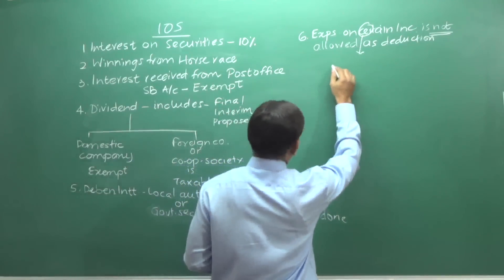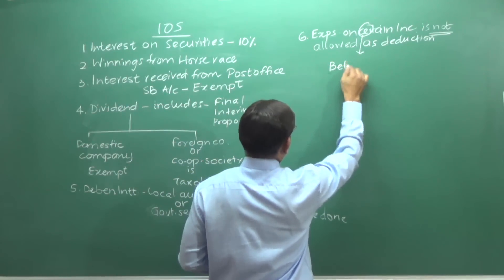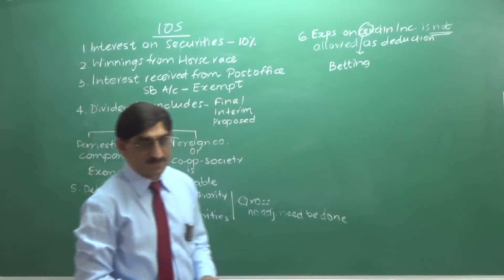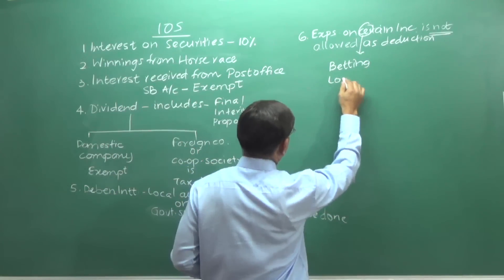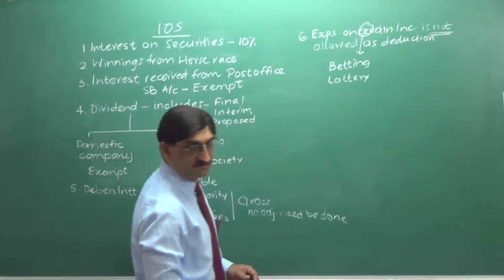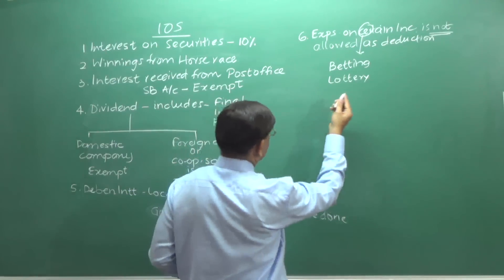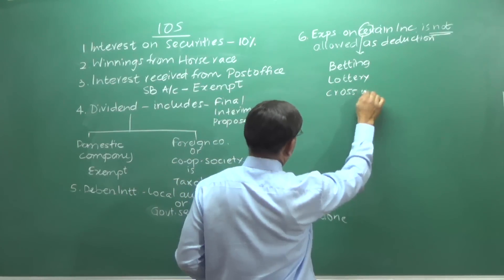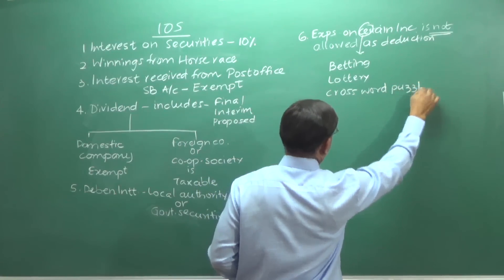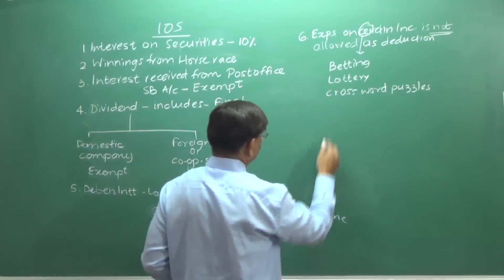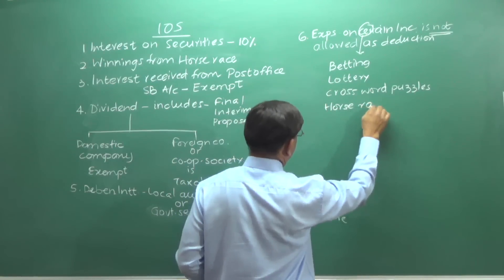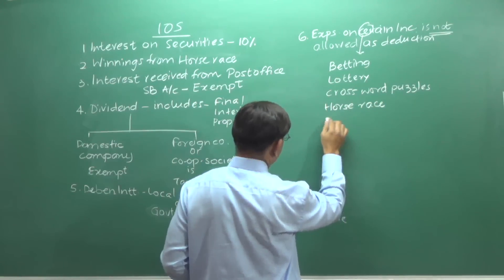The incomes are income from betting, income from lottery, income from crossword puzzles, income from horse race, income from gambling.